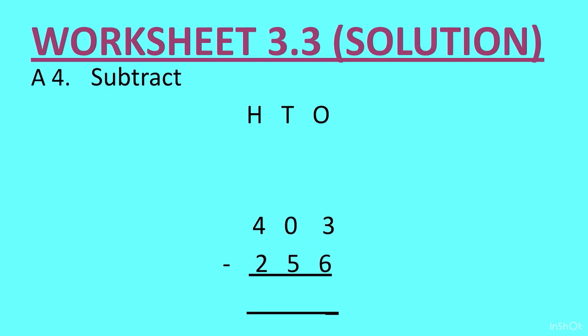Question 4: 403 minus 256. Ones column: 3 minus 6 not possible. The neighbor is 0, so from 0 we cannot take. Go to the hundreds column, cut the 4, write 3. Cut the 0 and write 10 on top, then cut the 10, write 9, and bring 1 ten to the ones column. This becomes 10 ones plus 3, so 13 ones. Write 13 on top. 13 minus 6 is 7. Tens: 9 minus 5 is 4. Hundreds: 3 minus 2 is 1. The answer is 147.